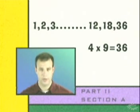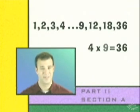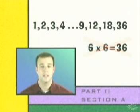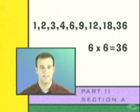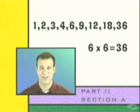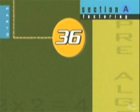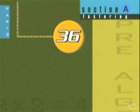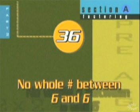4 times 9 equals 36, so they are both factors. 5 doesn't make the grade because we can't multiply it by any whole number to equal 36. 6 multiplied by 6 equals 36, so we list it as a factor one time. We don't need to write it twice because all we're doing is saying that it's a factor. Since 6 times itself equals 36, we know we're done with our factoring because there's no whole number between 6 and 6.